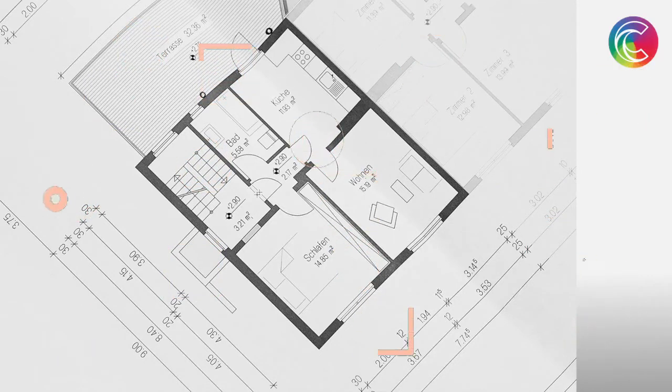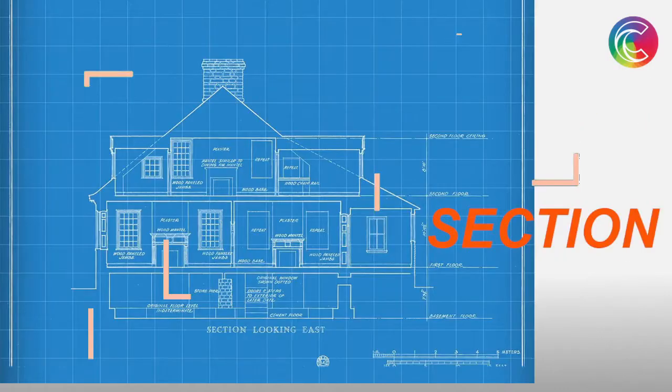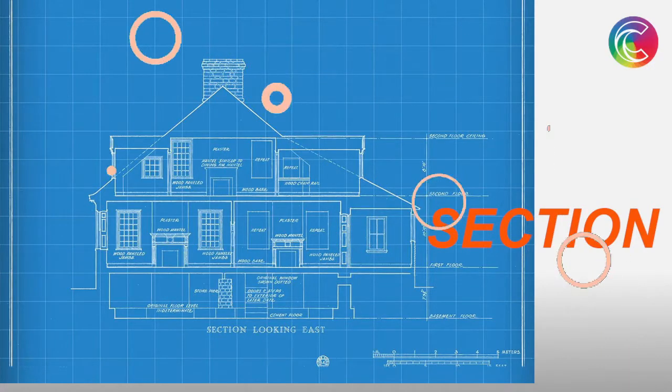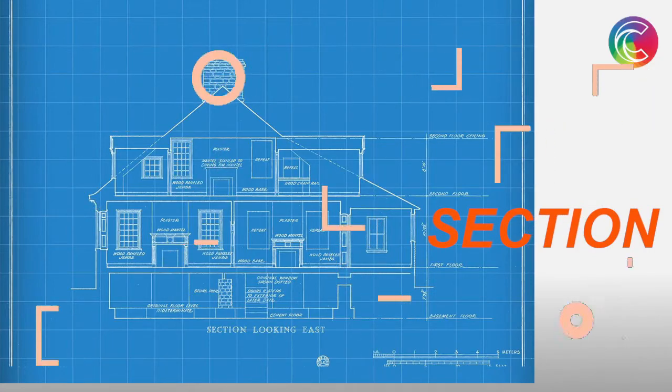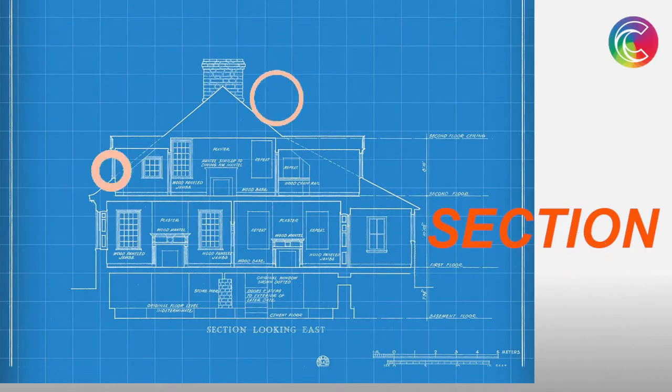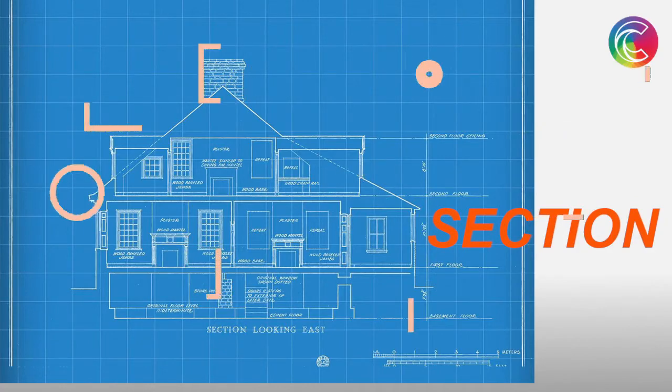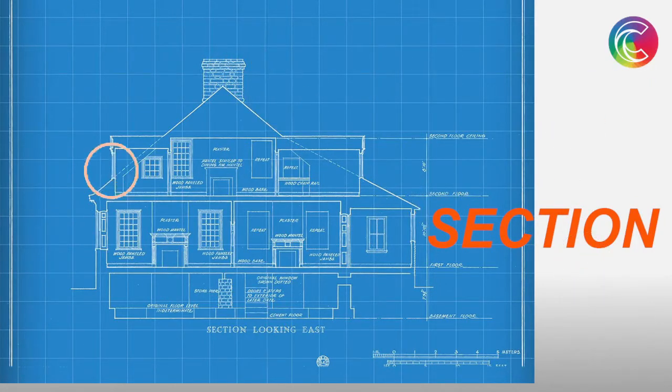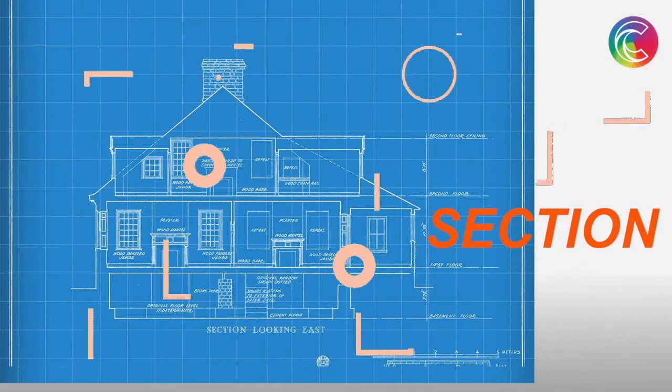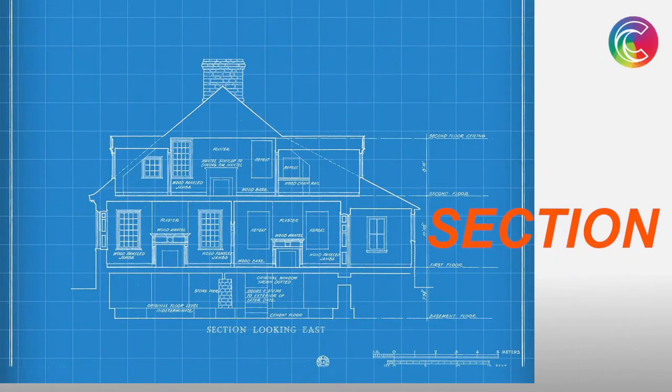This is the section. A section is when you vertically cut a building. Plan is when you horizontally cut a building to understand where the walls and windows are placed. Section is when you vertically cut the building. You will get the foundations, walls, beams, columns - wherever they are cutting. If you're cutting any door, you will cut the wall, then the door, then the wall again.